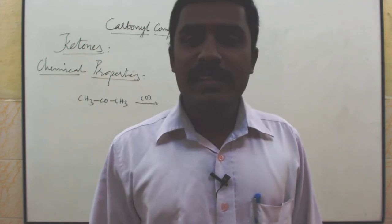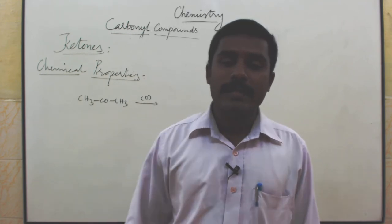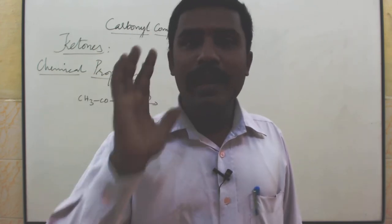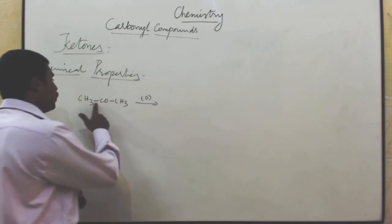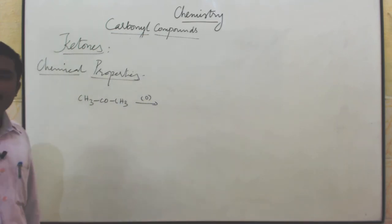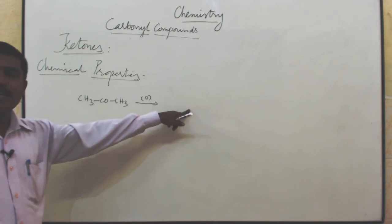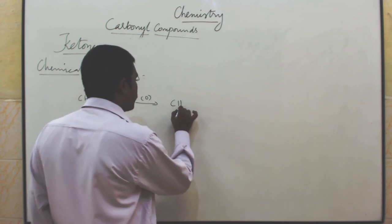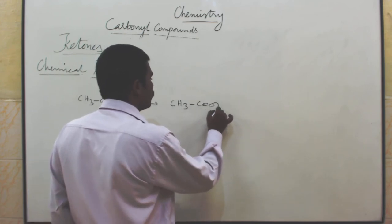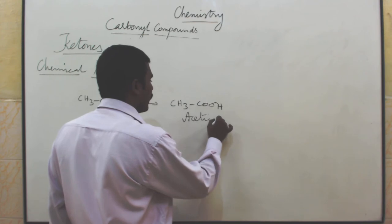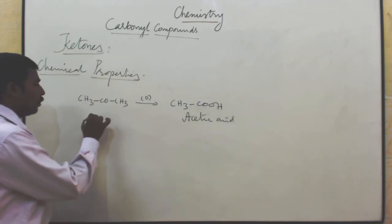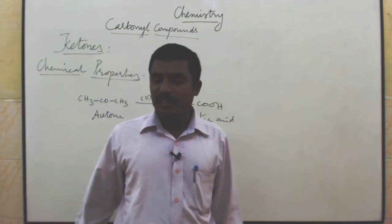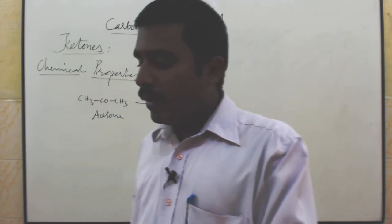Secondary alcohol undergoes oxidation reaction — acetone, ketone, is the product. Ketone further undergoes oxidation reaction to give carboxylic acid, but with one carbon less than the ketone. So ketone is 3 carbons; ketone undergoes oxidation reaction to give carboxylic acid.